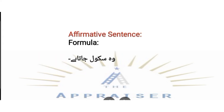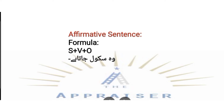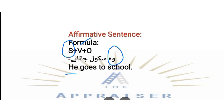Now let's discuss the affirmative or positive sentence of Present Indefinite Tense. The formula used is: Subject + Verb + Object. There is no helping verb in the affirmative sentence. For example: 'He goes to school.' Here, the subject is 'he,' the verb is 'go' — and since the subject is singular, we add S to get 'goes' — and the object is 'school,' with 'to' as the preposition. So: He goes to school.